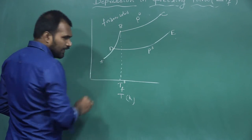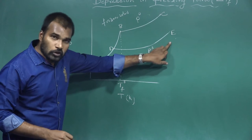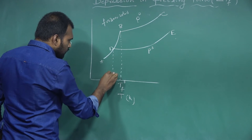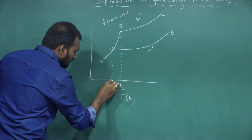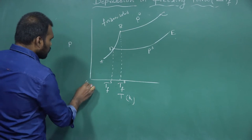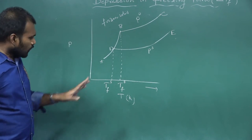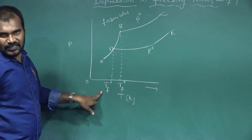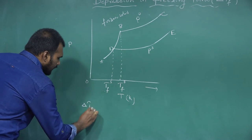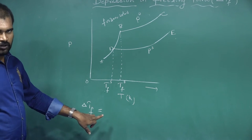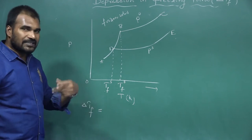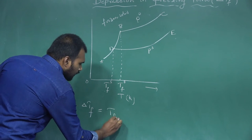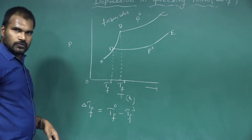From the graph, Tf° is higher than Tfs because after adding the non-volatile solute, the freezing point decreases. Therefore, ΔTf = Tf° − Tfs, where the higher value minus the lower value gives the depression in freezing point.